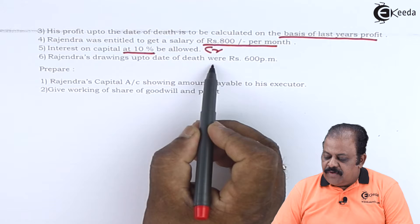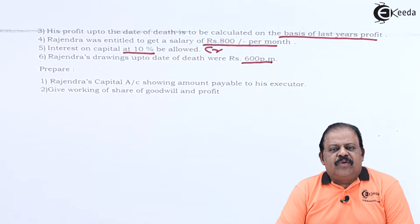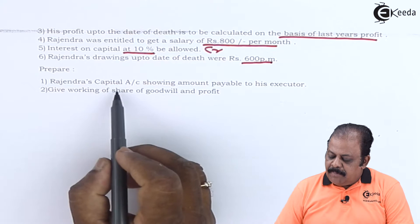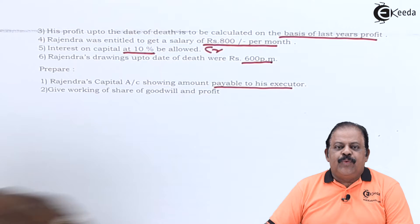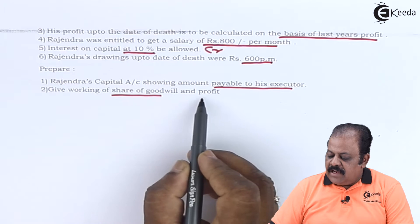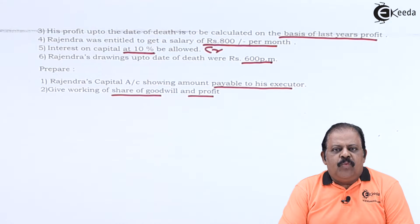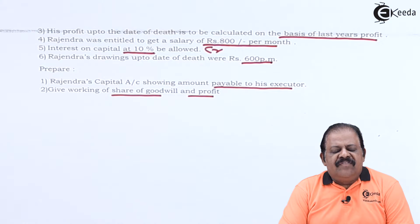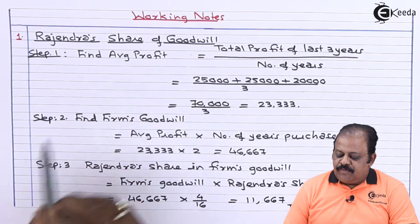Rajendra's drawings up to the date of death were 600 per month. We are required to calculate three months of drawings. We will prepare Rajendra's capital account showing the amount payable to his executor, along with working notes for the share of goodwill and profit.